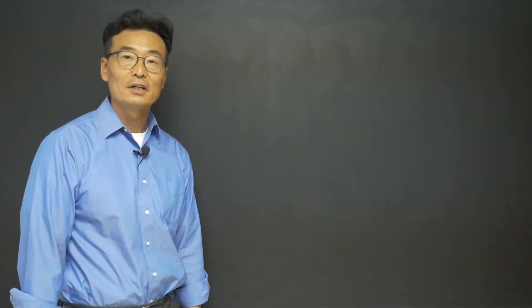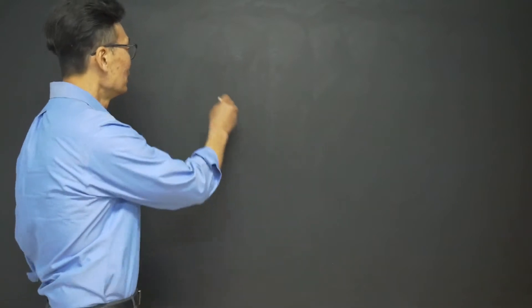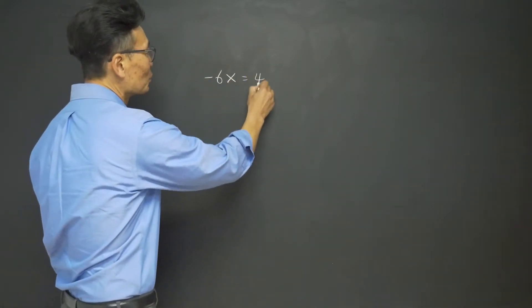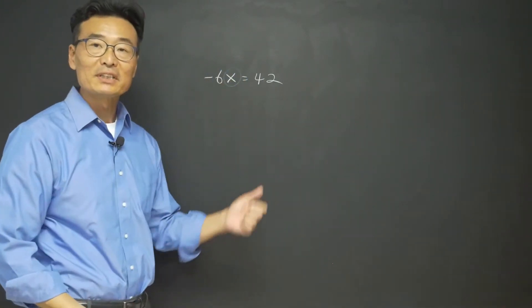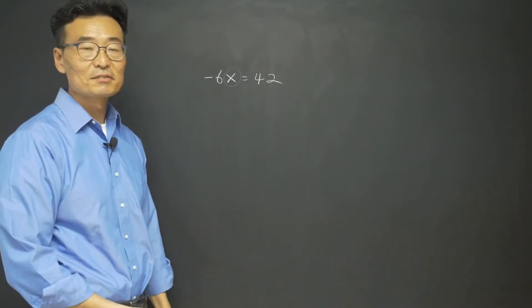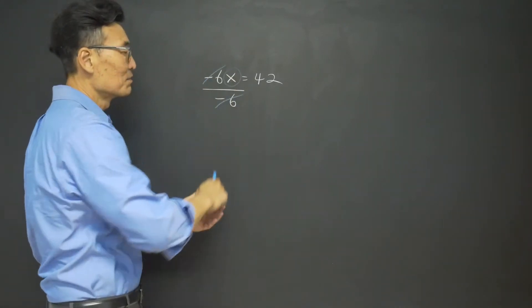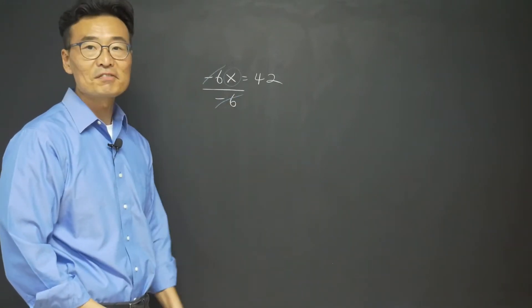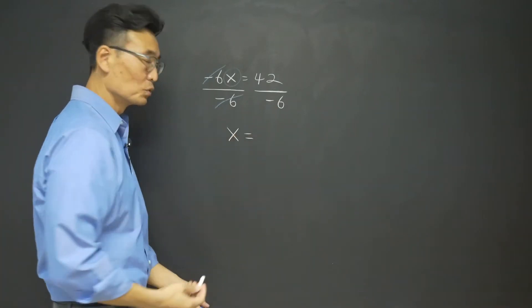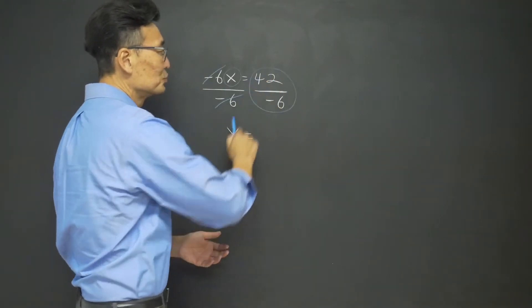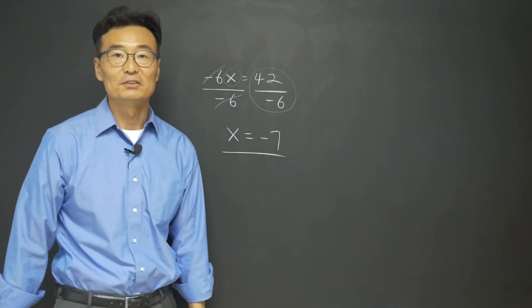This is our first lesson of Chapter 1: Solving Linear Equations. Given negative 6x equals 42, to solve for x we want x to be by itself. We get rid of the negative 6 by dividing both sides by negative 6. The negative 6 on the left cancels, and whatever you do on the left side of the equal sign, you do on the right side. Simplifying 42 over negative 6 gives us negative 7.